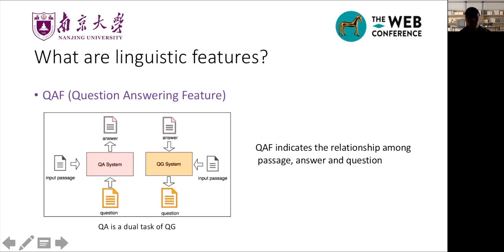QAF - we view QA as a dual task of QG. As we can see in the picture, QG takes answers and passage then outputs questions. On the other hand, QA uses questions and the passage as input, outputs the answers. We first train a QA system. Then in QG stage, we only give the passage to the QA model in order to get the hidden states. We use these hidden states as QAF's representation. We think these hidden states can give QG systems certain information about the relationship among passage, answer, and questions. Therefore, help the QG understand the context from different perspective.